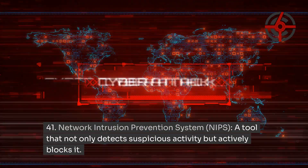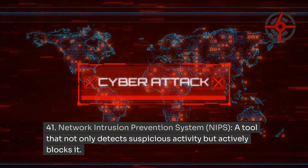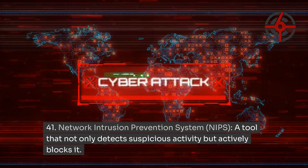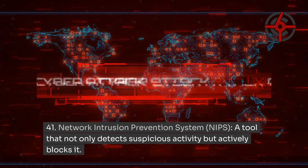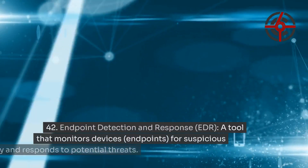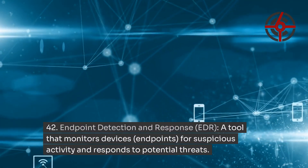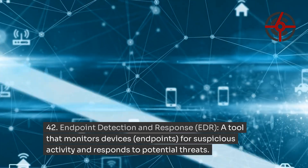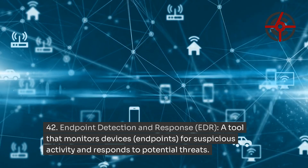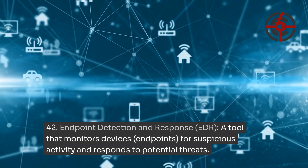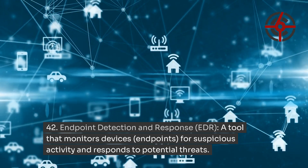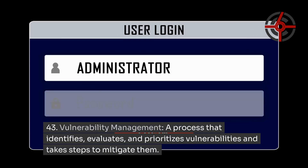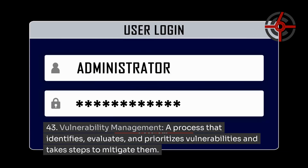Network Intrusion Prevention System (NIPS): a tool that not only detects suspicious activity but actively blocks it. Endpoint Detection and Response (EDR): a tool that monitors devices (endpoints) for suspicious activity and responds to potential threats. Vulnerability Management: a process that identifies, evaluates and prioritizes vulnerabilities and takes steps to mitigate them.